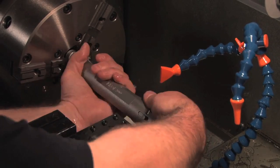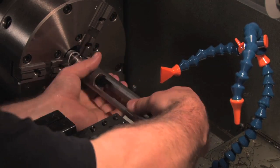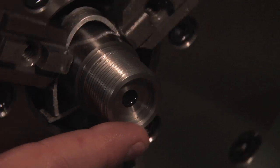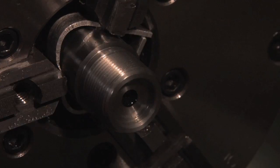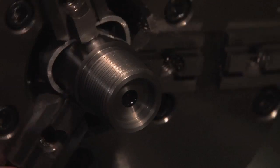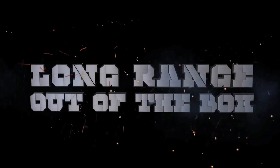This verifies the thread tenon fits the action thread within a prescribed tolerance. After a final visual inspection, this thread tenon is complete and the barrel is now ready for the chambering operation.